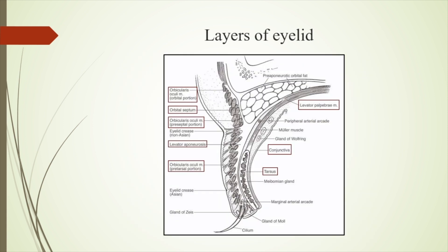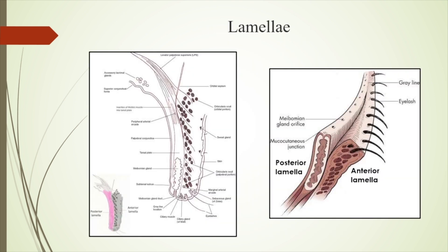These are the layers of the eyelid, starting from the skin up to the conjunctiva. Most importantly for lid reconstruction, we have the anterior and the posterior lamella. The anterior lamella is formed by the skin and the orbicularis muscle, and the posterior lamella is formed by the conjunctiva and the tarsus, which gives the cartilaginous framework for the reconstruction part.